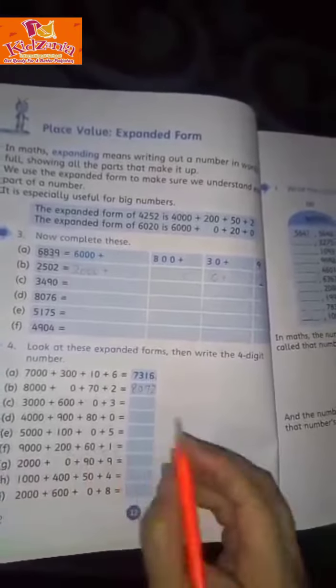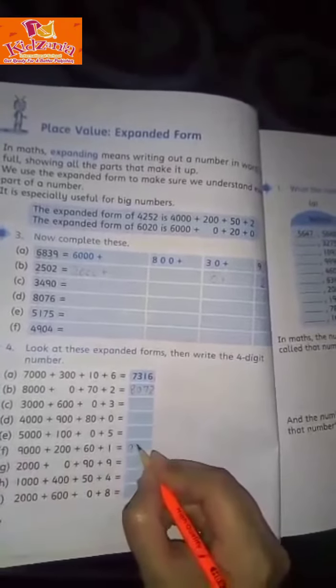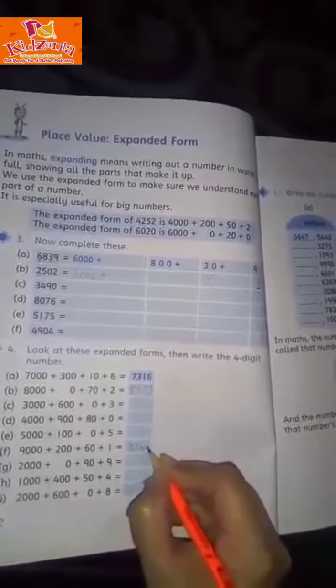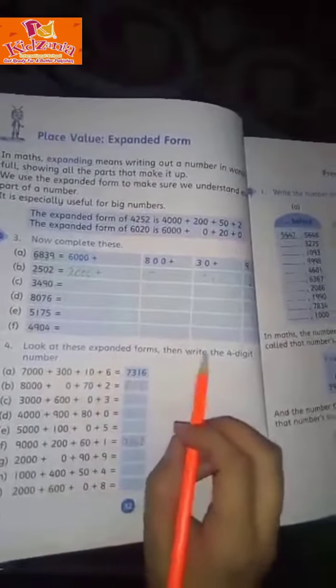9,261. This is called expanded form to convert to a 4-digit number.